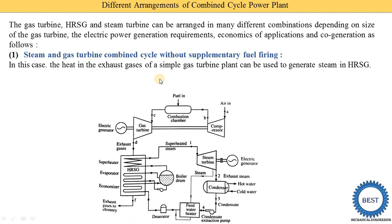As shown in the diagram, the upper part is the gas turbine power plant — compressor, combustion chambers, and the gas turbine. The exhaust gas coming out from the gas turbine is supplied to the HRSG. After passing through the HRSG, the exhaust gas is released to the atmosphere via a chimney. The HRSG is a combination of economizers, evaporators, and superheaters. The economizer heats the water, the evaporator converts water into steam, and the superheater superheats the steam.